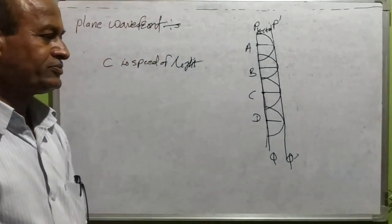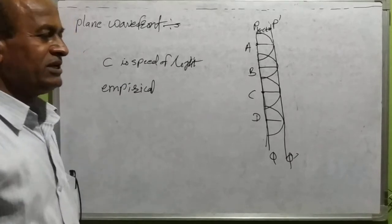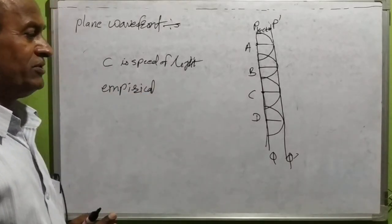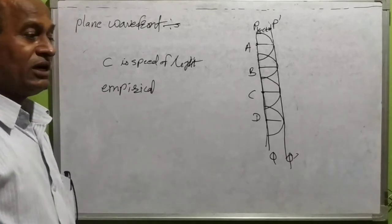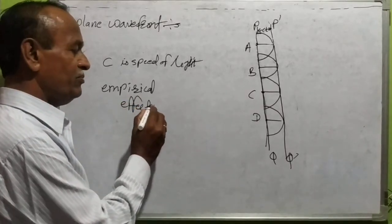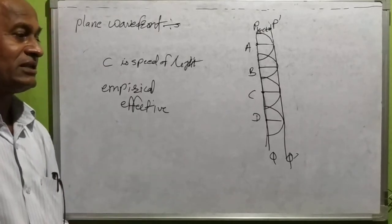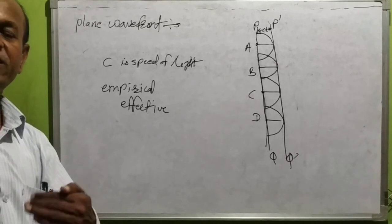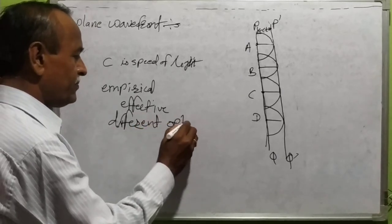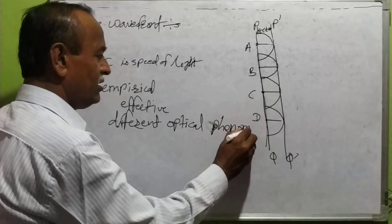Huygens' theory is empirical. Empirical means based on direct or indirect observation. There is no reason given why the backward wave will not be effective. This theory was accepted because it explains different optical phenomena.